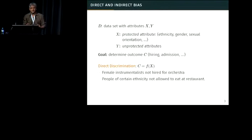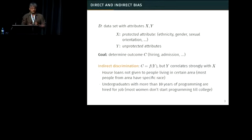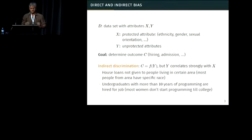The more insidious and harder form of discrimination that we'll be talking about is what I'll call indirect discrimination, where the outcome is not a function of the protected attribute X — it's actually a function of the unprotected attributes Y — but Y correlates strongly with X. In the classic case of redlining, house loans were made or denied based on where you lived, but it just so happened that where you live strongly correlates with race because of segregation. Another stylized example: you might say I want to hire undergraduates from my tech startup who have 10 years of programming experience, but they have to be young. Because historically women come to programming later, they will effectively not be selected, even though there is nothing in the hiring policy that says we don't want to hire women.